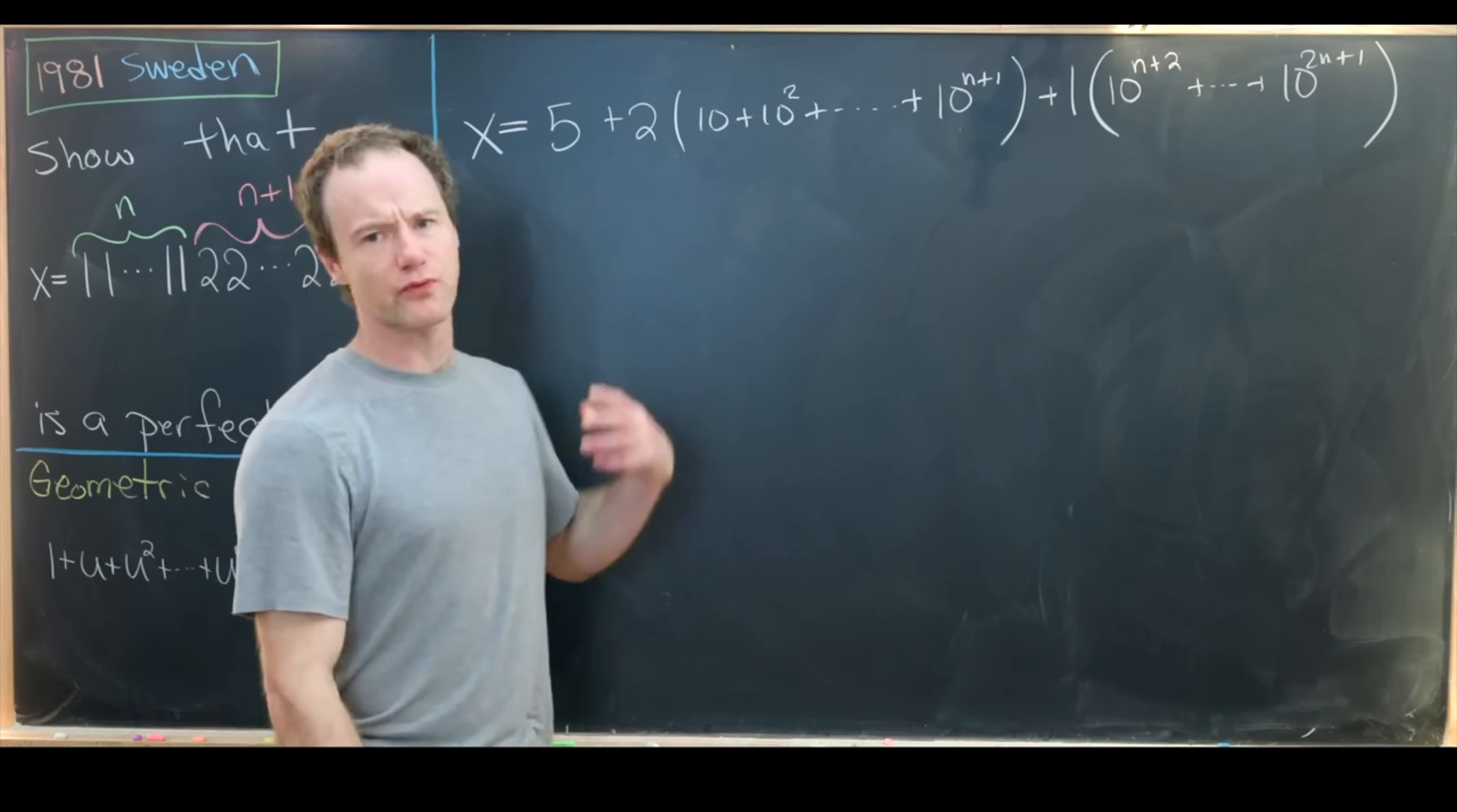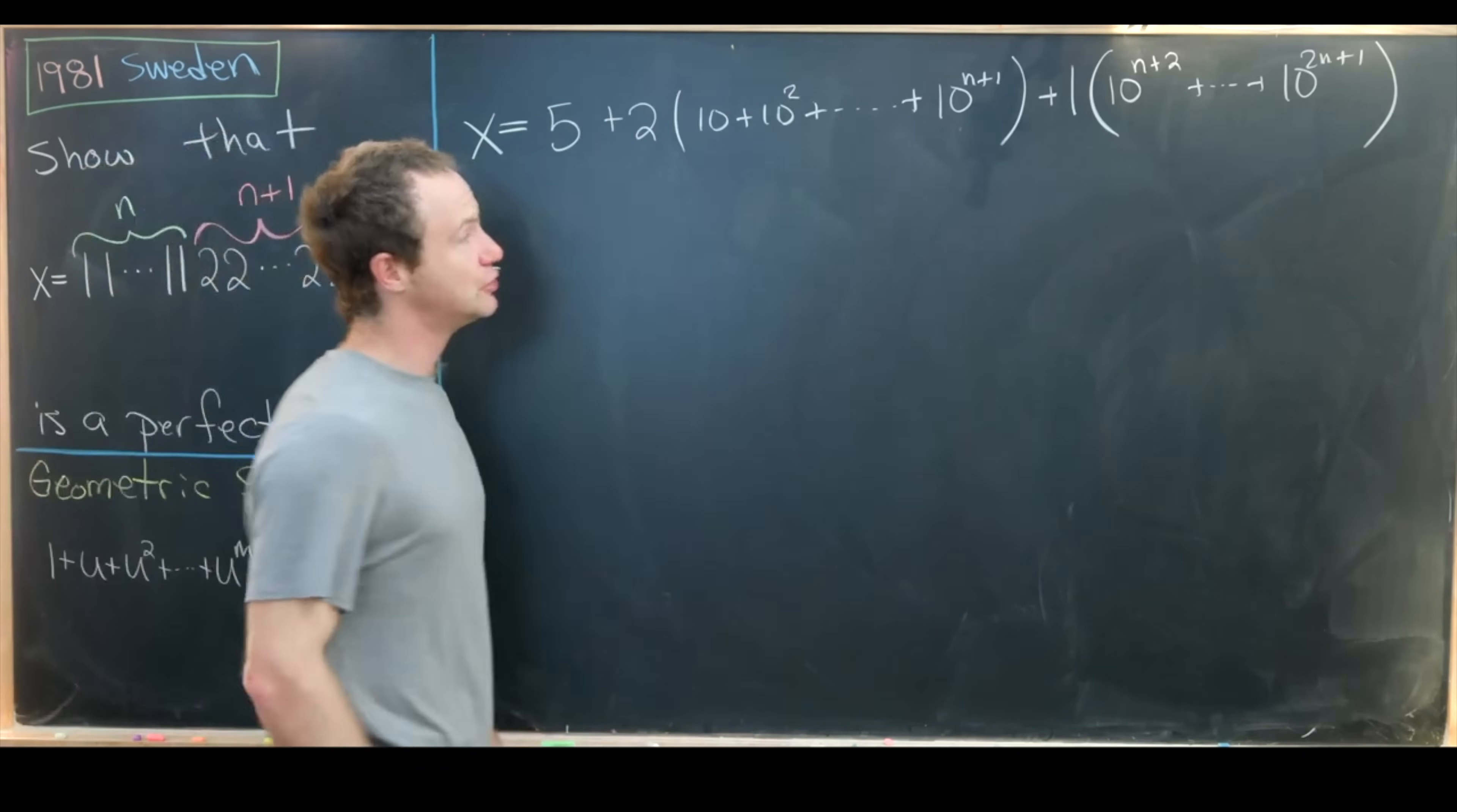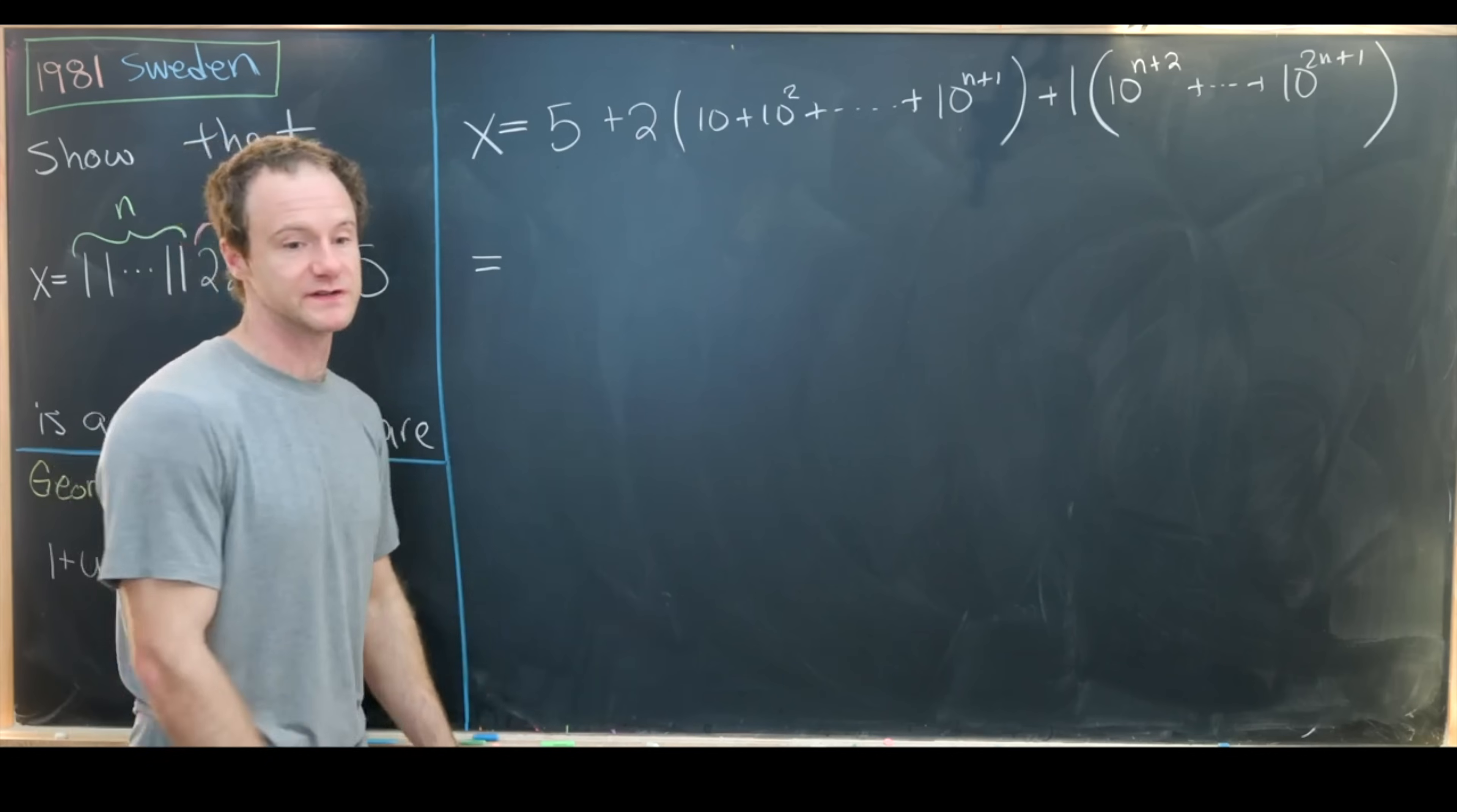Okay, and I think you could probably apply this geometric series formula to each of these objects to write it as some sort of quotient. But I think there's a bit of a shortcut, and that shortcut will be to break this into two parts, leave one on its own and combine the other one with this, so we're always working with a sum that starts at 1.